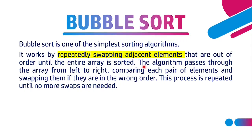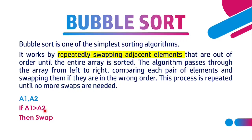The algorithm passes through the array from left to right, comparing each pair of elements and swapping them if they are in the wrong order. This process is repeated until no more swaps are needed. For a pair a1 and a2, to be in sorted order a1 must be less than a2. If a1 is greater than a2, they interchange their places, resulting in a2 followed by a1.